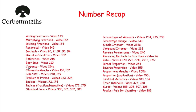Lowest common multiple and highest common factor: to find the LCM you can write down the multiples of the numbers and find the lowest one. Alternatively, do your product of primes, draw your circles, put the prime numbers in, and for the LCM just multiply all the numbers together. For the HCF, you can list the factors of two numbers — for instance 15 and 20 — and the HCF would be five.